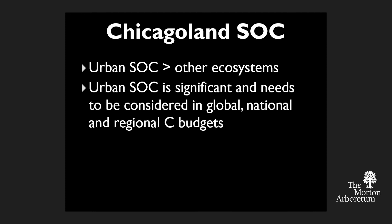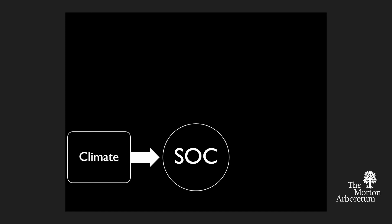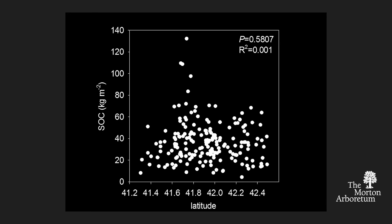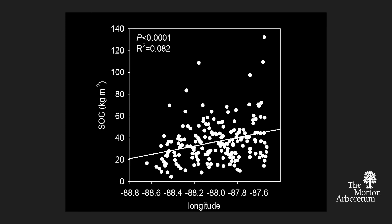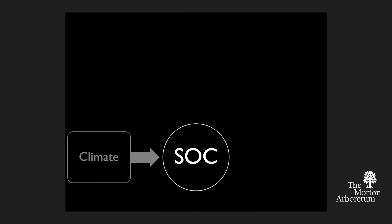There's a lot of organic carbon in urban systems relative to other systems, and it definitely needs to be accounted for in global, national, and regional carbon budgets. Testing the soil forming factors model: for climate, we used latitude as a proxy for temperature and expected higher latitude to mean higher organic carbon content — we didn't see that. We looked at longitude and saw a significant but very weak relationship — as you move further toward the lake, higher organic carbon. Gravimetric soil moisture showed no relationship, so climate doesn't appear to be a strong indicator.